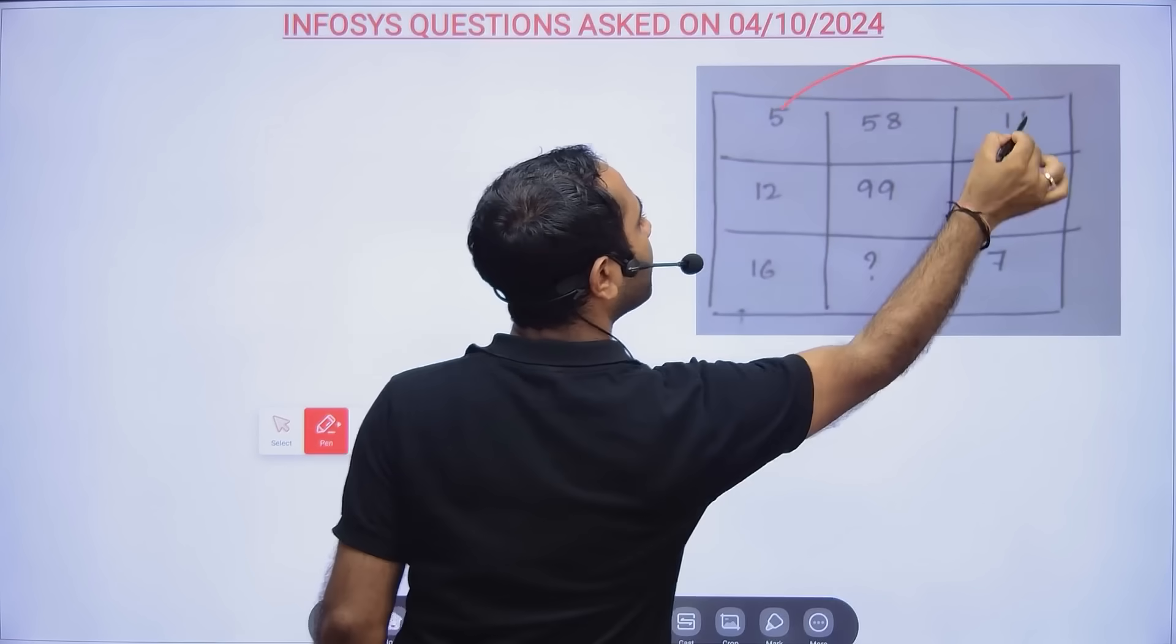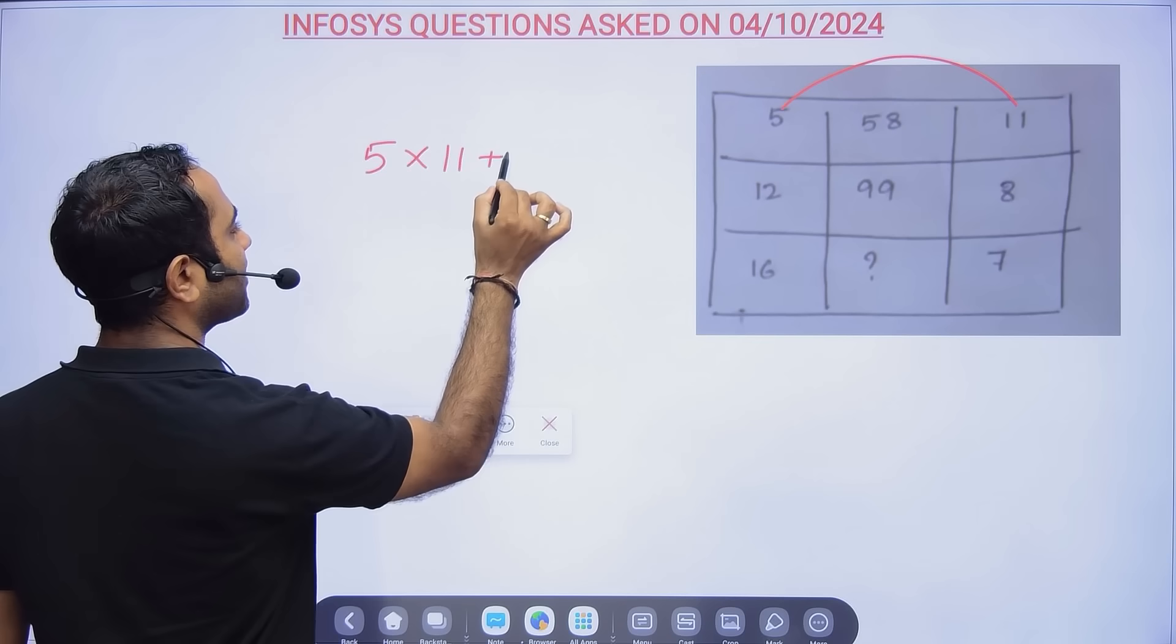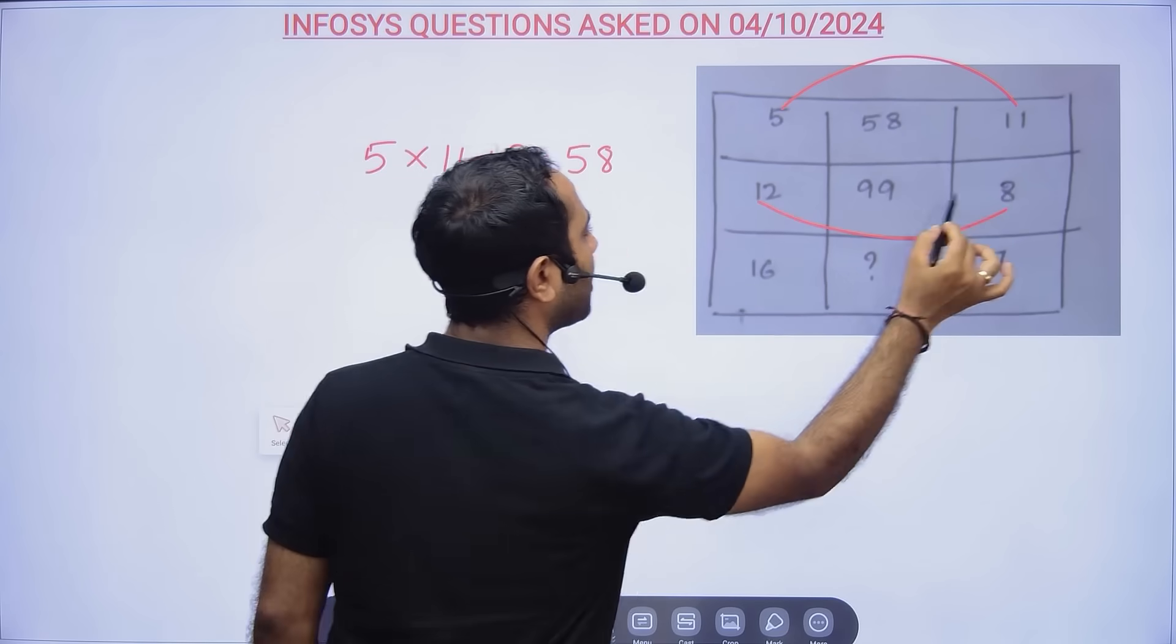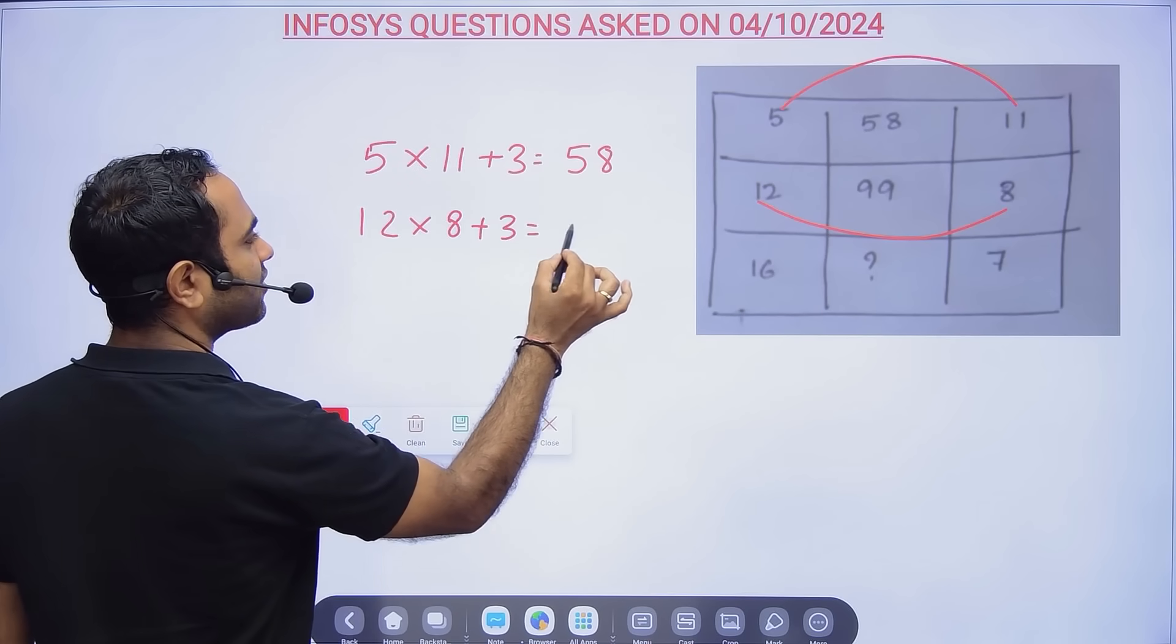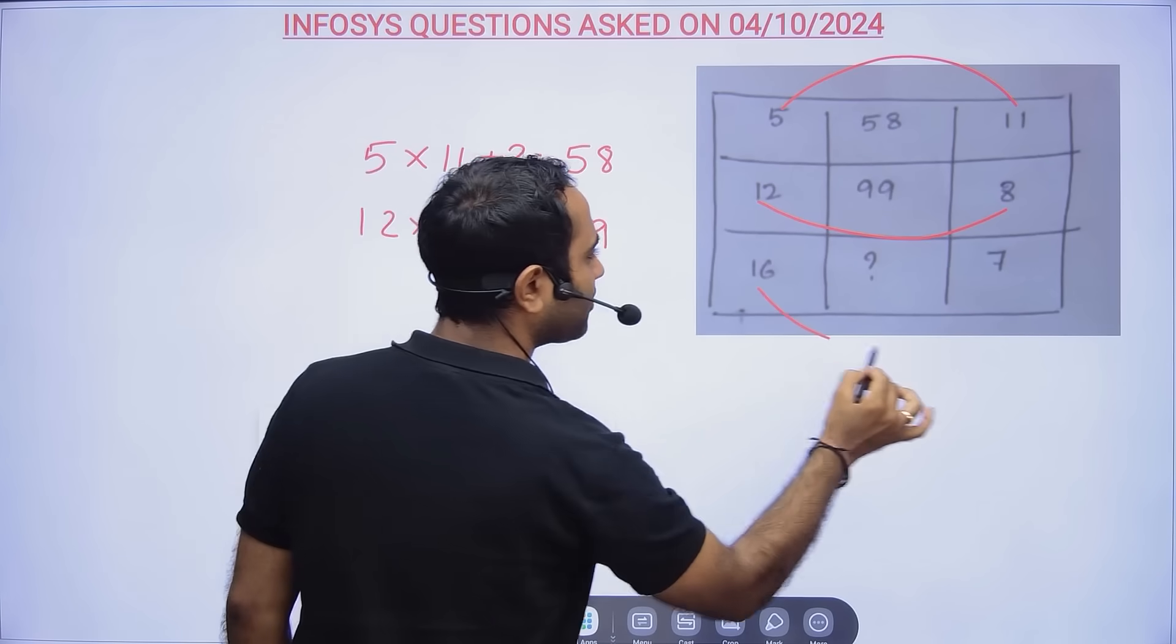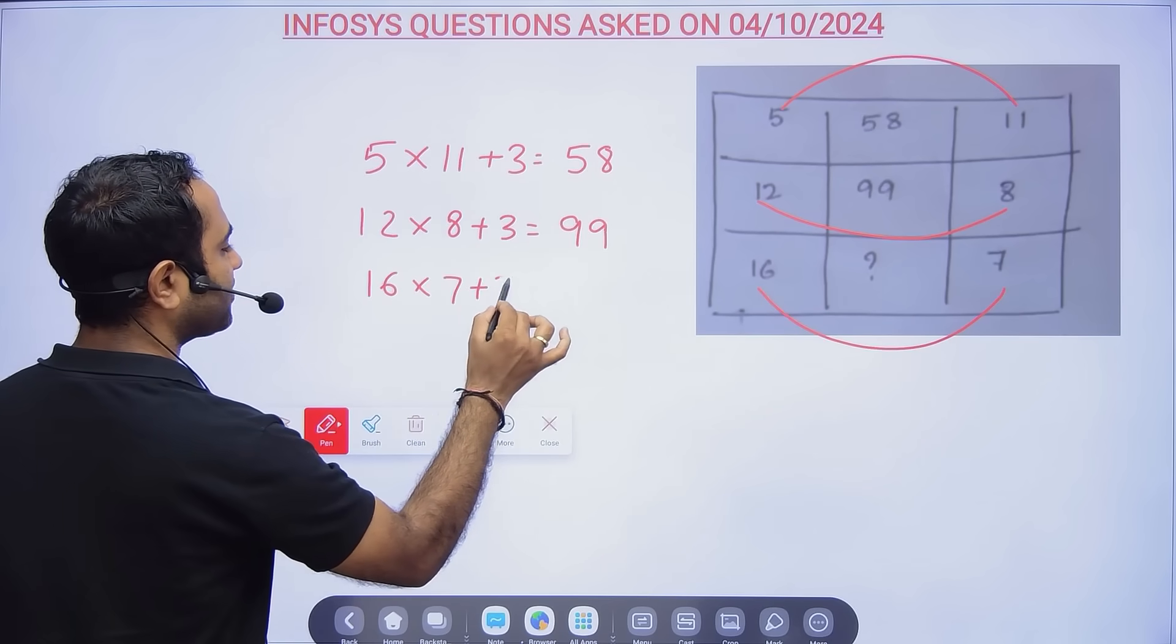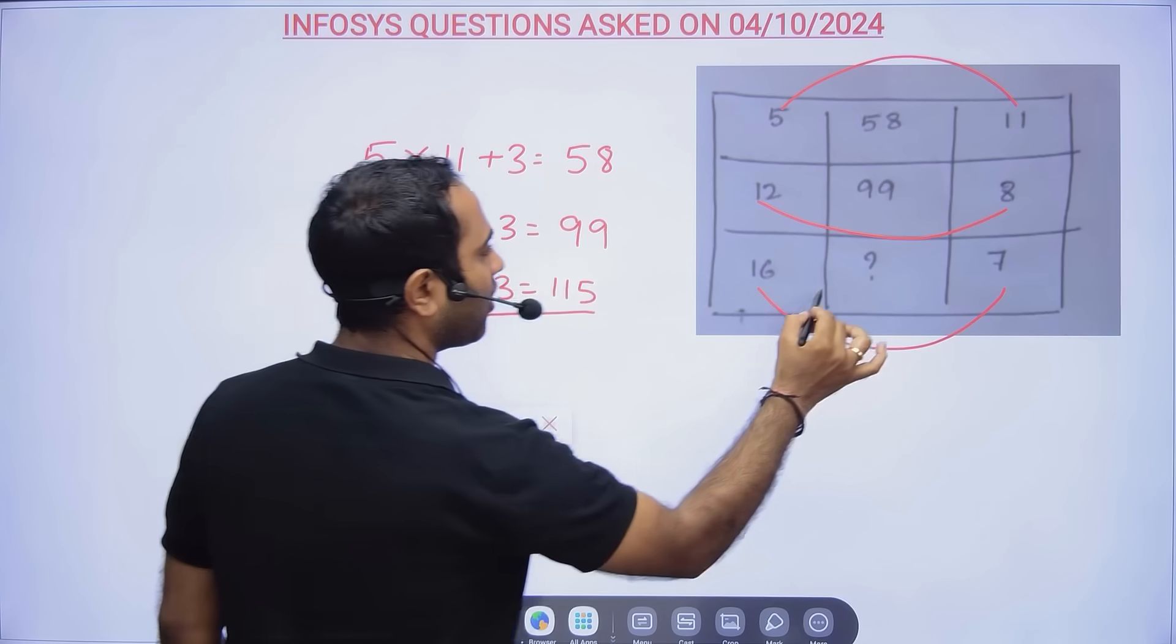Basically, 5 × 11 is multiplied plus 3, so it's 58. Then 12 × 8 plus 3 is 99. So here 16 × 7 = 112 plus 3 becomes 115.